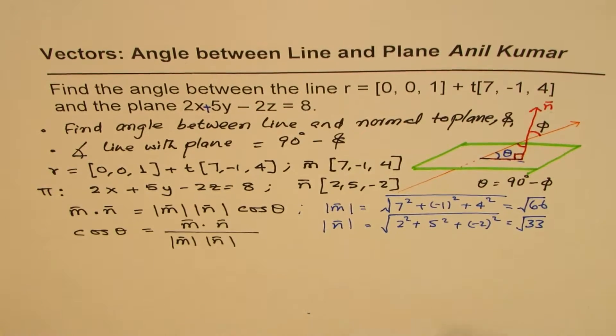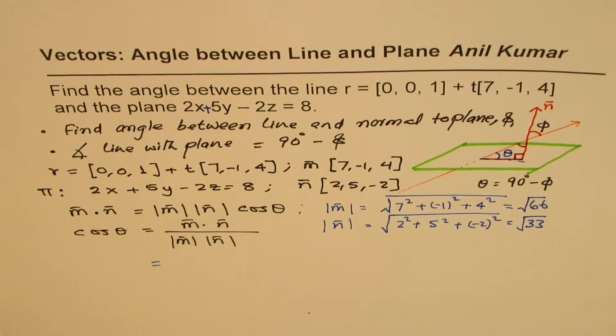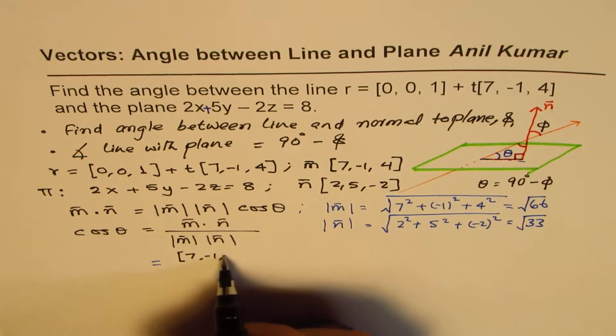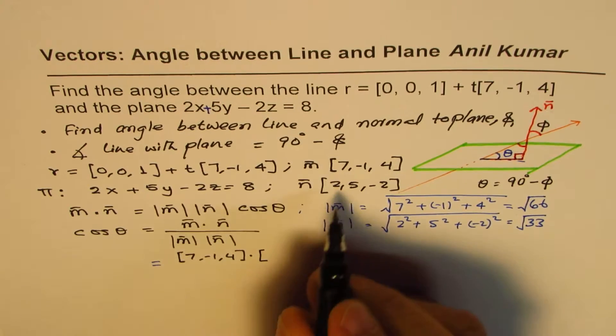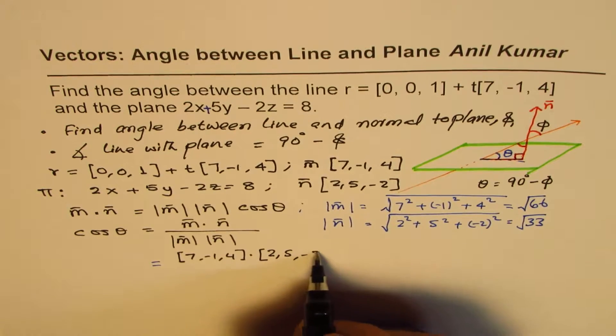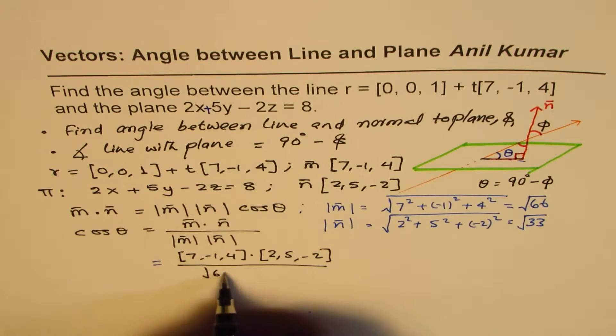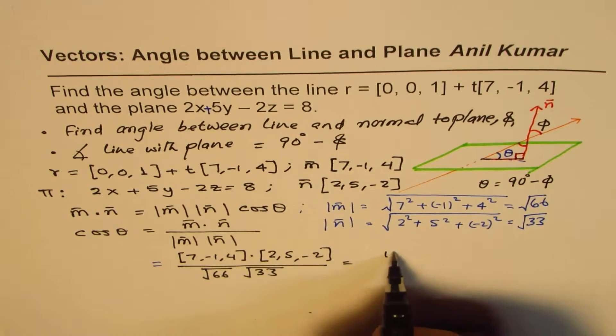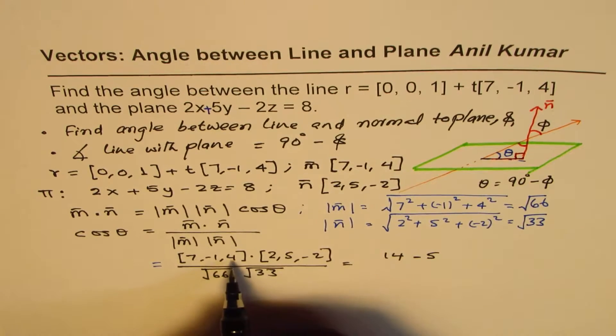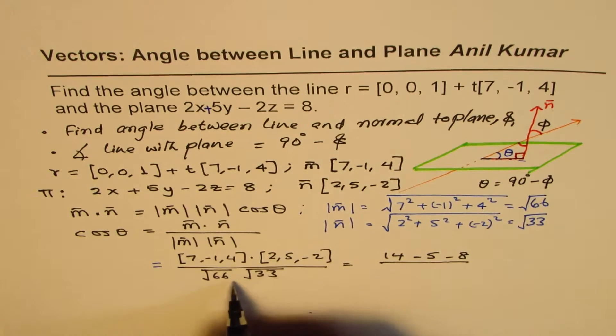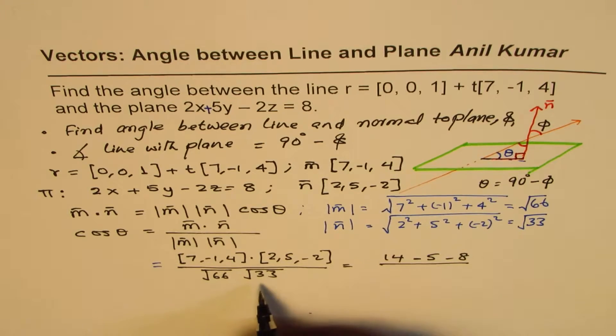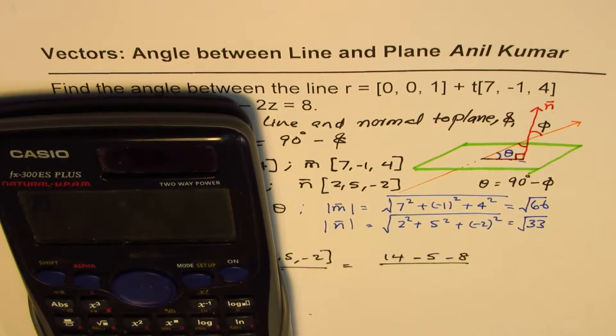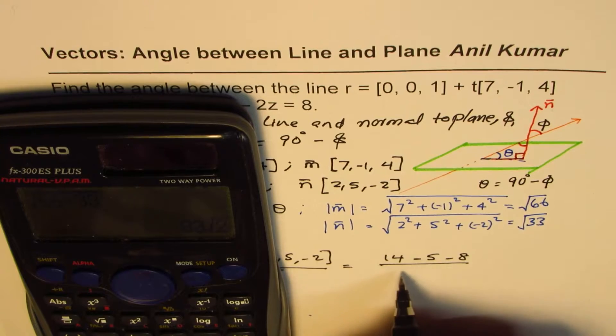So we have their magnitudes, and we can substitute these values here. M · N, which is [7, -1, 4] · [2, 5, -2], divided by magnitude of √66 and √33. That gives us 7 times 2 minus 5 minus 4 times 2 (which is 8 with a negative sign). Well, we have 14, minus 5, minus 8. And the denominator, we have √(66 × 33), that is 33√2.